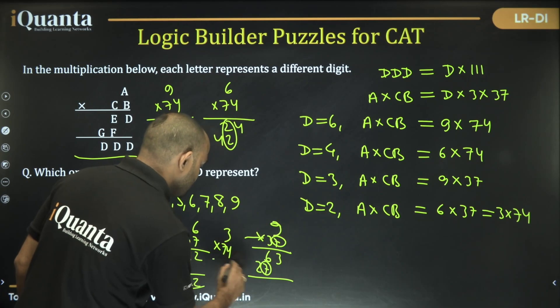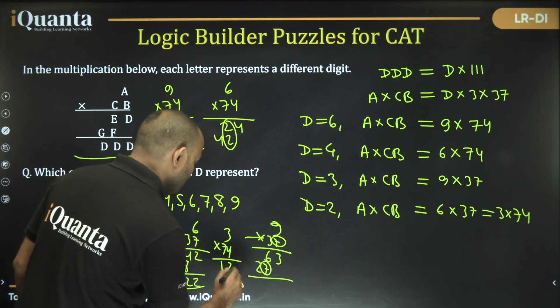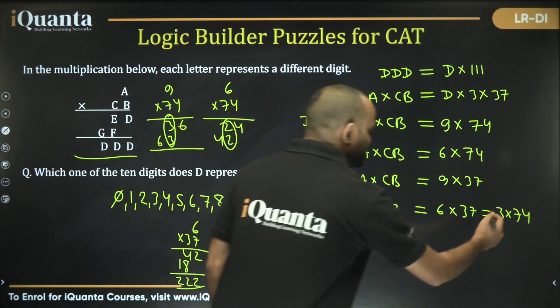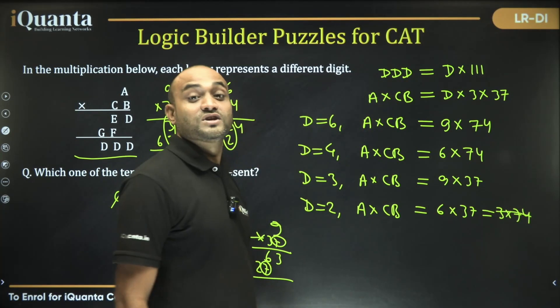Does it work with the next one as well? So 4 into 3 is 12, 7 into 3 is 21. No, these two are again same, these two are also same. So this won't work. 6 into 37 works.